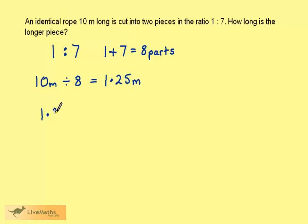One part is 1.25 metres. 7 times 1.25 is going to be 8.75. Therefore, the longer piece of rope is going to be 8.75 metres long.